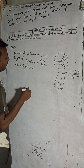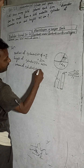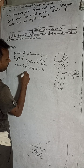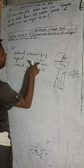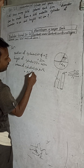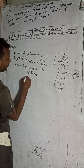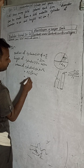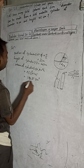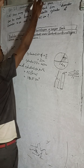Volume of cylinder V = πr²h. Here r = 2, so r² = 4. Height = 45. So volume = π × 4 × 45 = 180π cm³.